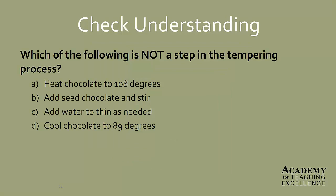Another quick check for understanding: Which of the following is not a step in the tempering process? A) Heating chocolate to 108 degrees, B) Adding seed chocolate and stir, C) Add water to thin as needed, or D) Cool chocolate to 89 degrees? If you said C, you were absolutely correct. We definitely do not want to add water to chocolate — during the tempering process it will just ruin it.